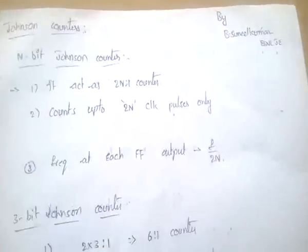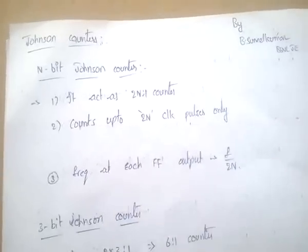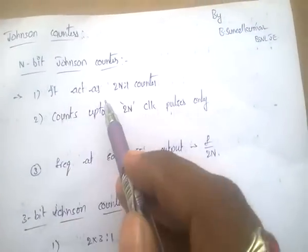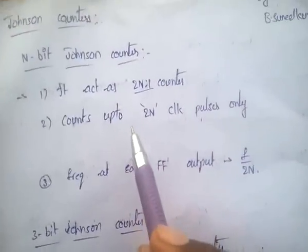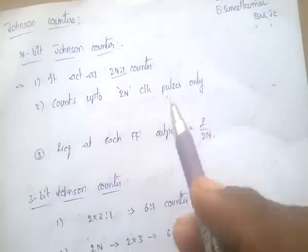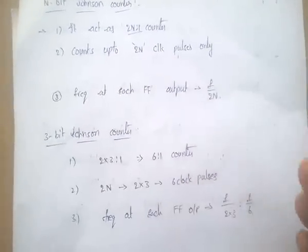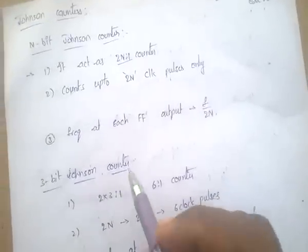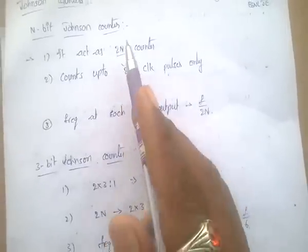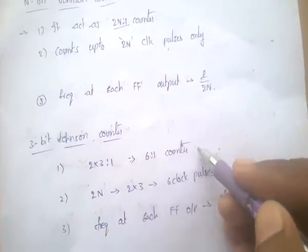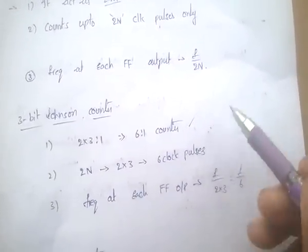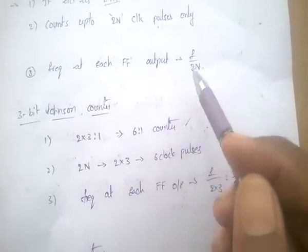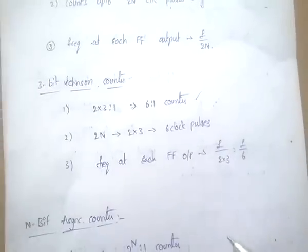Next, Johnson counters. For an n-bit Johnson counter, it acts as a 2n-to-1 counter, counts up to 2n clock pulses, and the frequency at each flip-flop output equals f/2n. For example, a 3-bit Johnson counter acts as a 6-to-1 counter, counts up to 6 clock pulses, and the frequency at each flip-flop equals f/6.